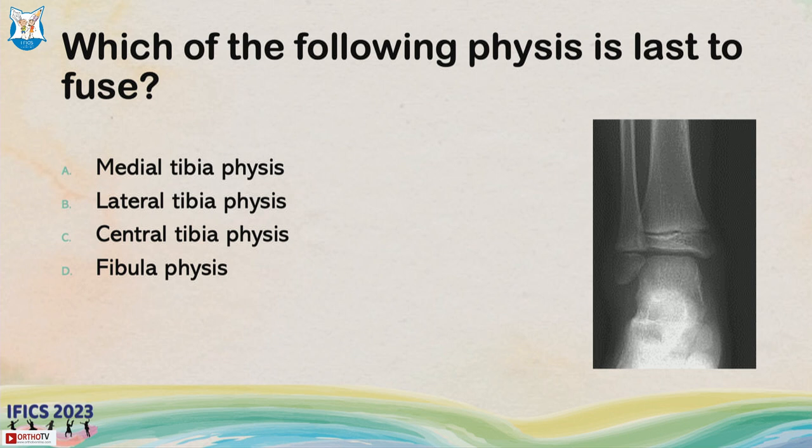We'll start off with some ARS questions. Which of the following physes is last to fuse: medial tibia, lateral tibia, central tibia, or fibula?